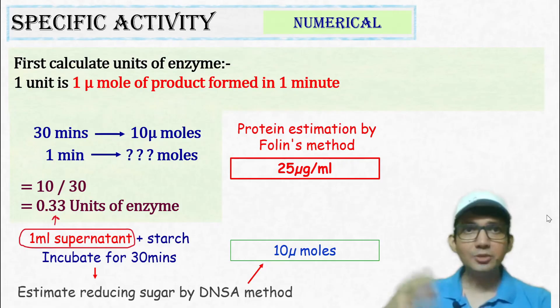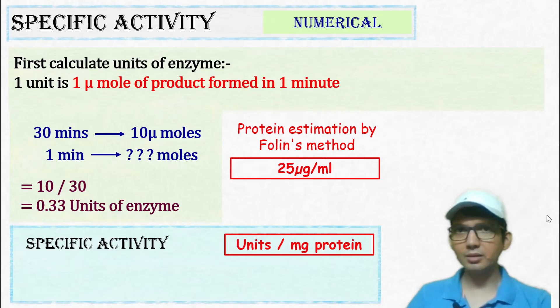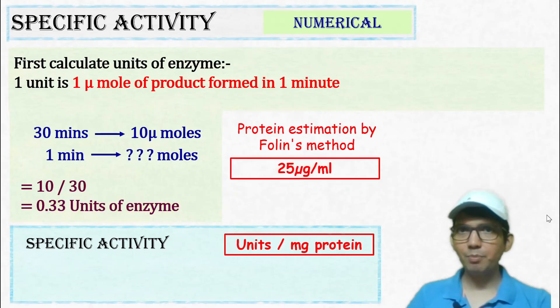So, let's use this information to calculate specific activity of enzyme. Specific activity is units per milligram of protein. Now, 25 micrograms has 0.33 units of enzyme.